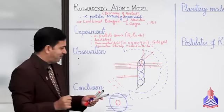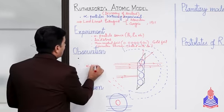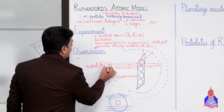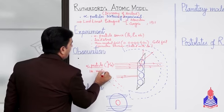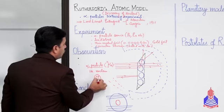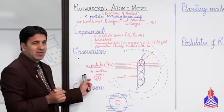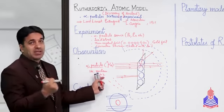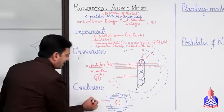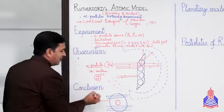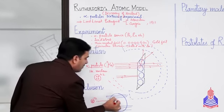Alpha particle کیا ہے؟ اسے He-2-4 سے represent کرتے ہیں۔ Alpha particle actually helium nucleus ہے۔ Helium کے nucleus میں دو proton اور دو neutron ہوتے ہیں، اور دو proton کی وجہ سے اس پر plus two charge ہے، یہ massive اور highly positive ہے۔ جب یہ alpha particle nucleus کے قریب گیا تو nucleus پر بھی positive charge ہے، positive-positive repulsion کی وجہ سے یہ deflect ہو گیا۔